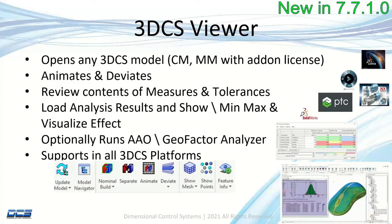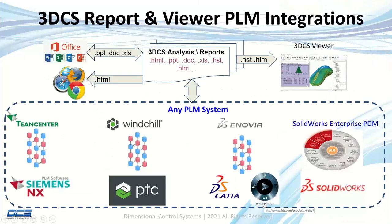At the bottom you can see the icons — all your graphic animation icons are available: build, separate, animate, deviate, turn points on and off. Basically you have everything available to you except creating moves, creating tolerances, creating measures, or editing them — other than editing the tolerance value within AAO.